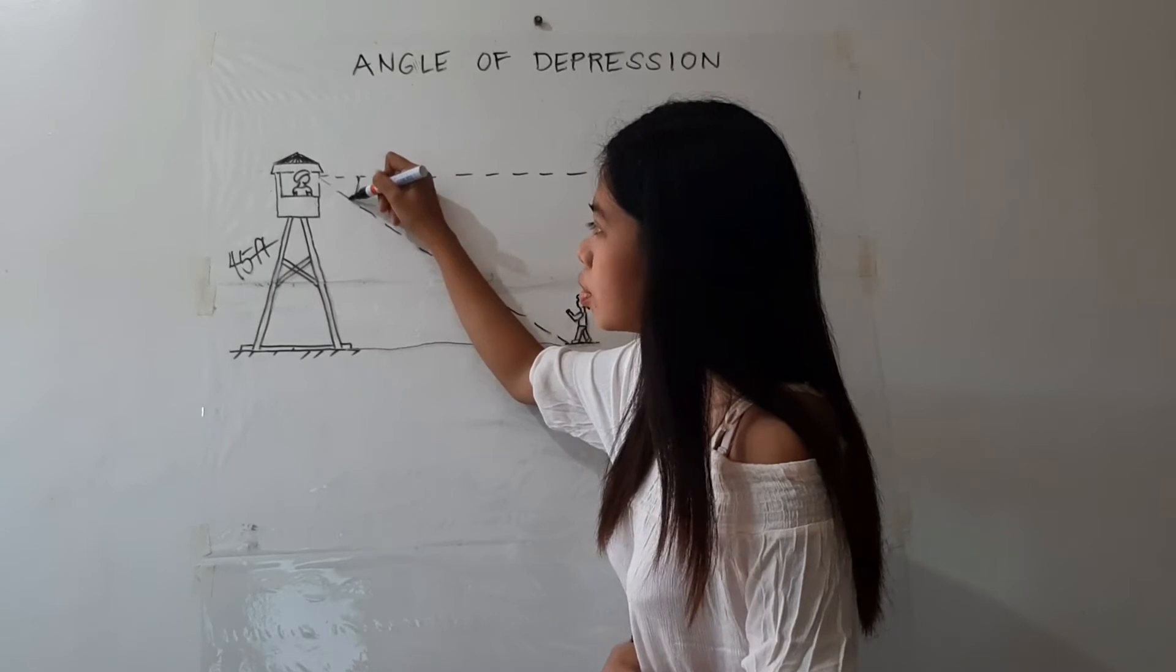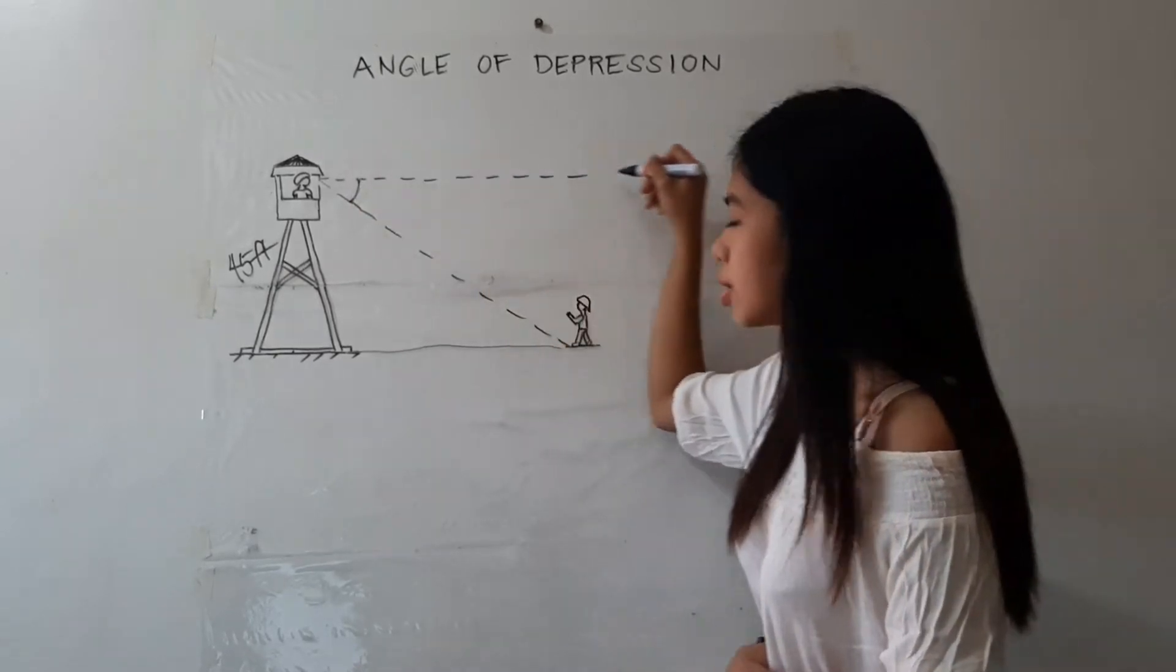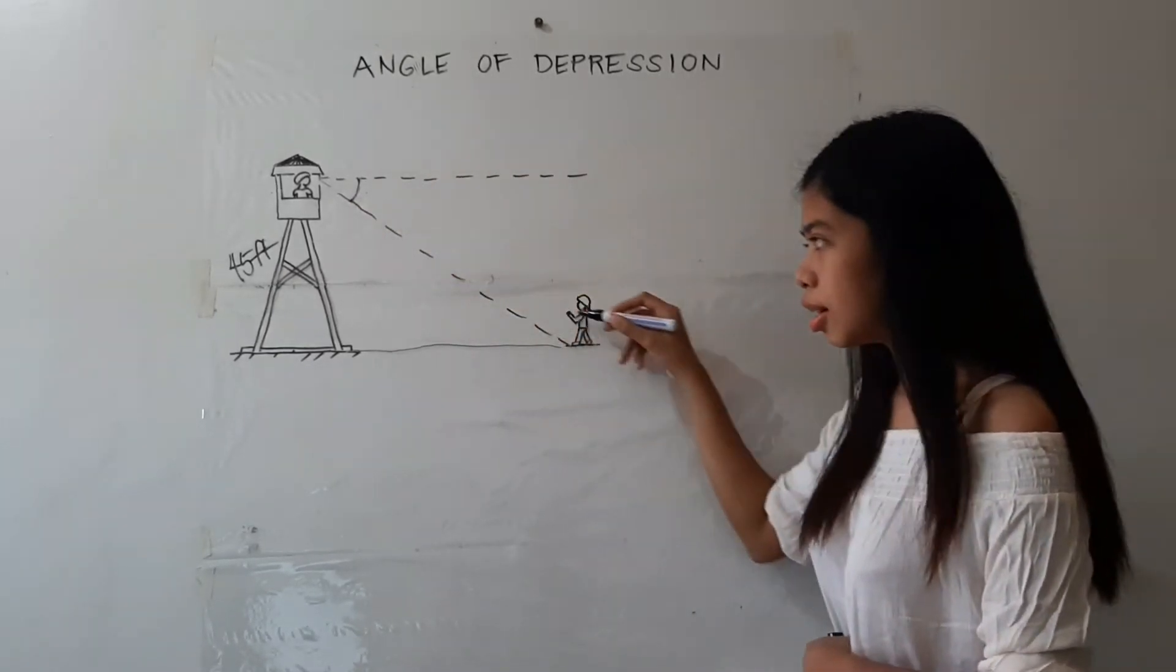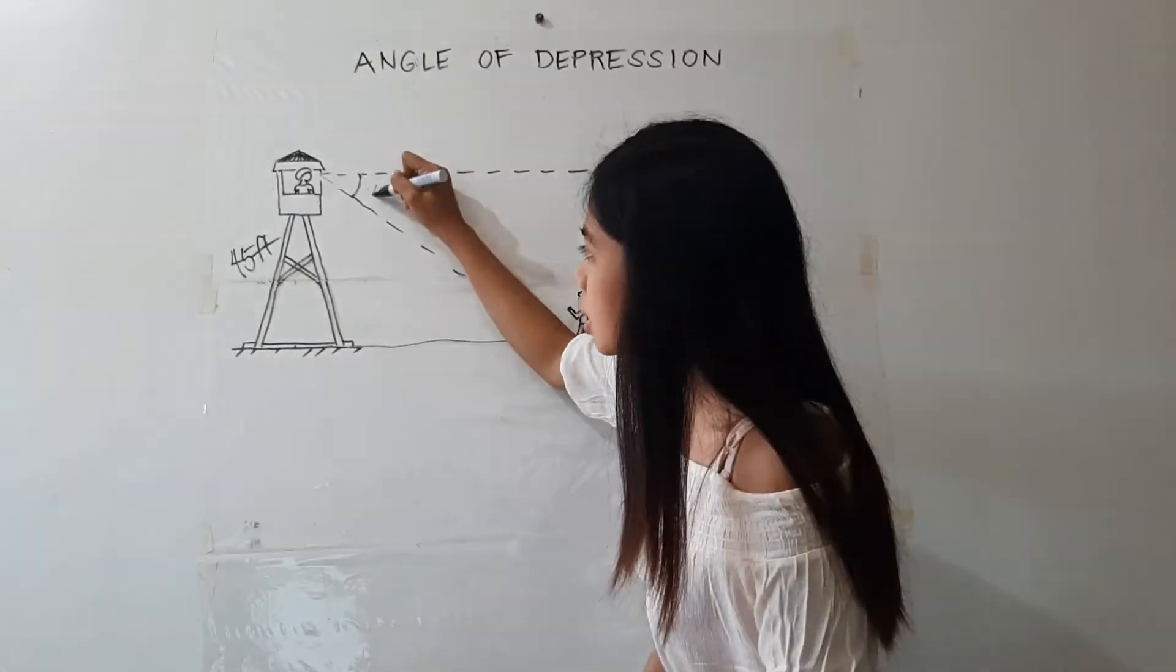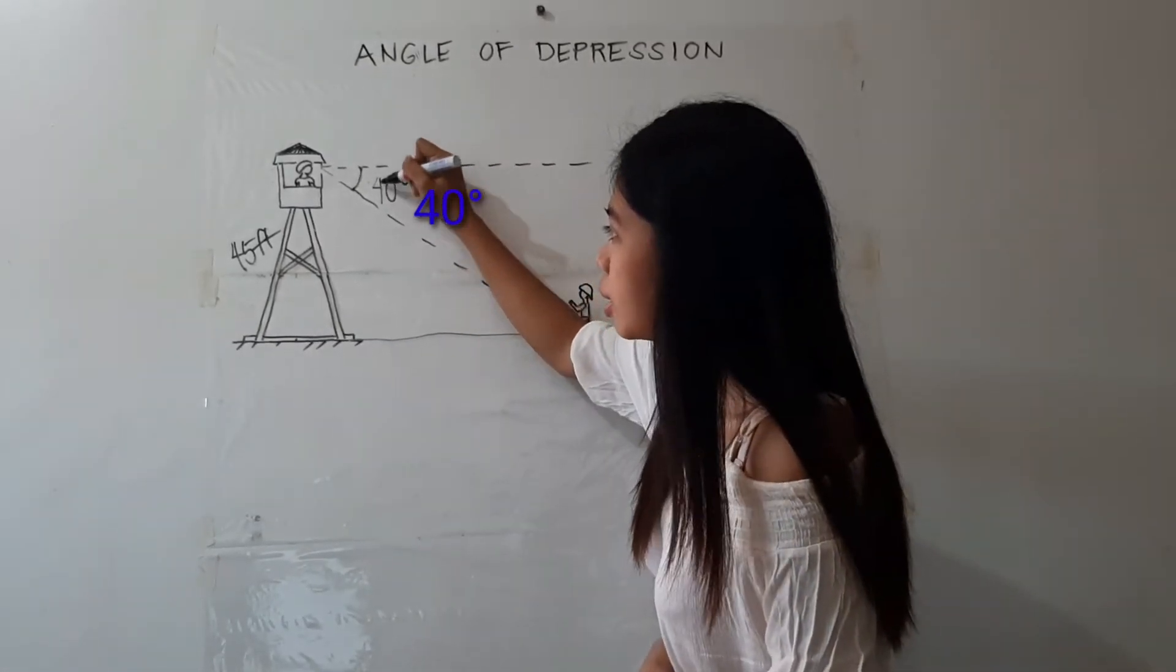Again, the angle of depression is between the horizontal line and the line of sight of the observer. So 40 degrees should be located here.